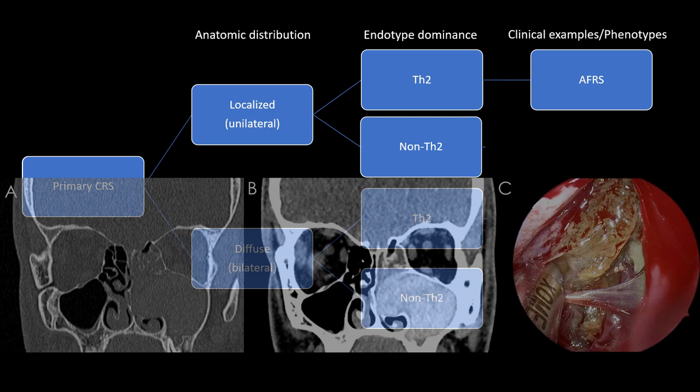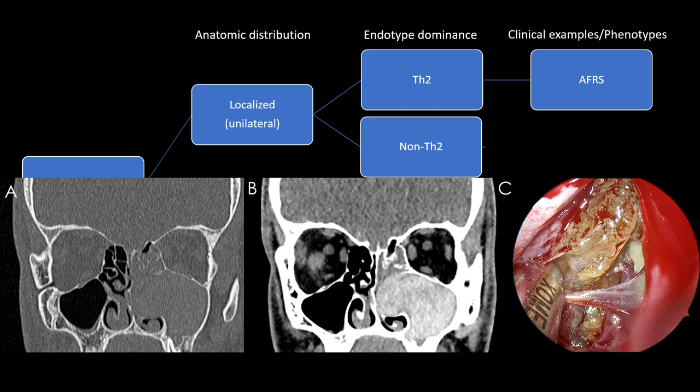The first example of a localized Th2-dominant condition is allergic fungal rhinosinusitis. Here we see a young 17-year-old atopic boy who has developed a fungal reaction in his left maxillary sinus, with classic hyperdensity material and fungal mucin found at surgery. This condition relates anatomically to the inability to clear fungal-containing mucin in someone with hypersensitivity to fungal elements. The right side is normal because mucus clearance mechanisms are working well there. This is a great example of a localized Th2-driven condition, where surgery is a key part of early management.